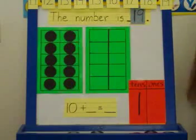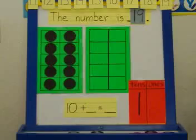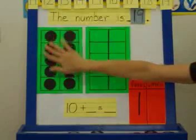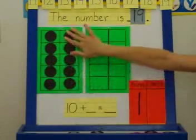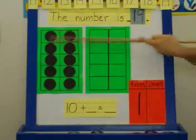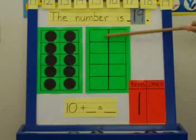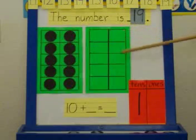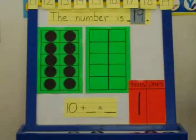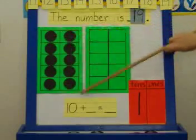Okay, we're going to look at the 10 frame again. Remember we already talked about that when the 10 frame is filled, it is 10. So we already have 10 here. In order to get 19, we're going to need to fill in some of these spaces with 9 dots to show 19.